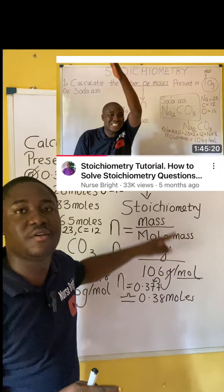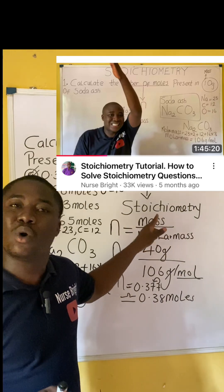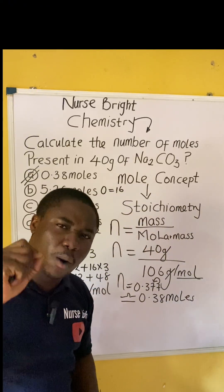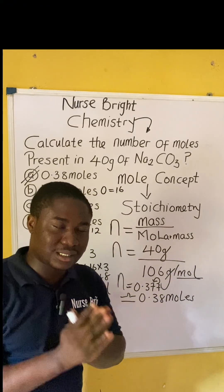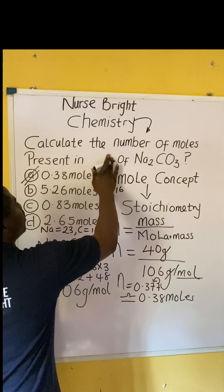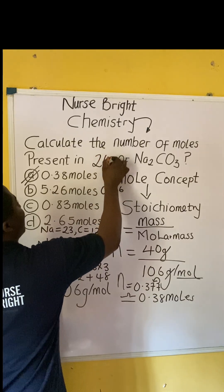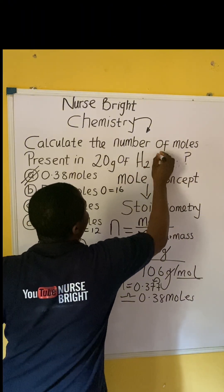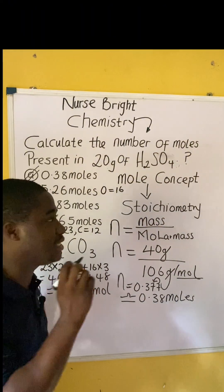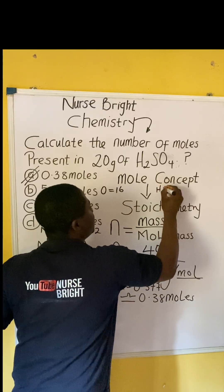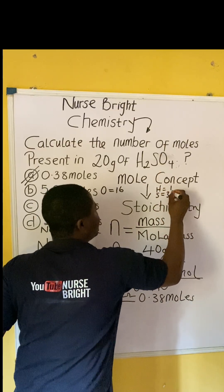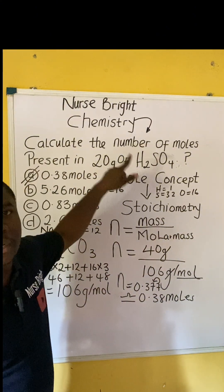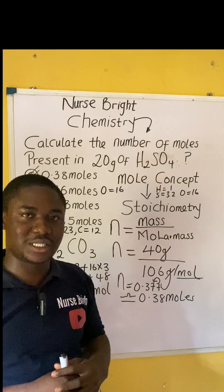Remember, on my YouTube channel I already have a full video lesson on this topic, so ensure you go watch that lesson to understand every other aspect. Here is your practice question before I end: solve for the number of moles present in 20 grams of H2SO4. The atomic masses are: hydrogen = 1, sulfur = 32, oxygen = 16. Provide your answer in the comment section.